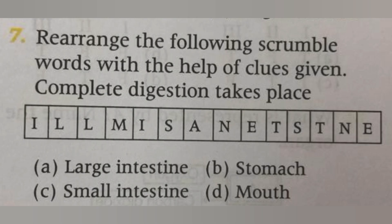Next, rearrange the following jumbled word with the help of the clue given: complete digestion takes place. Options: A. Large intestine, B. Stomach, C. Small intestine, D. Mouth. The answer is C, small intestine. Complete digestion takes place in the small intestine.